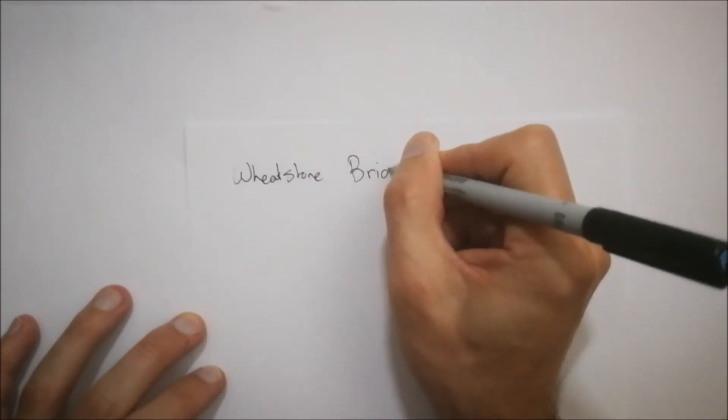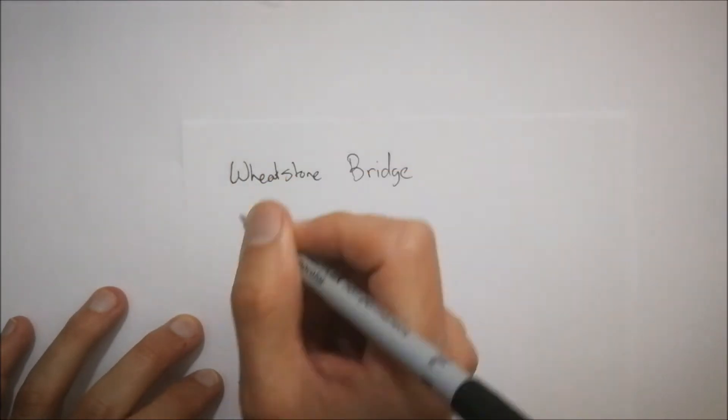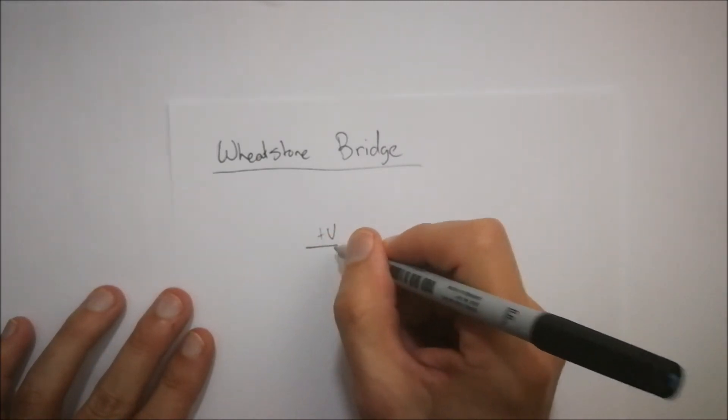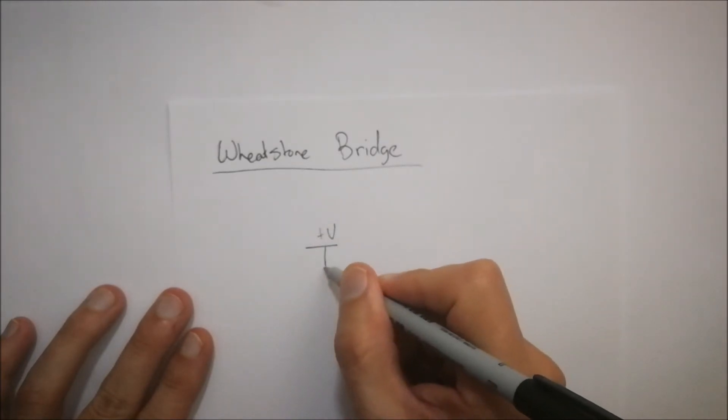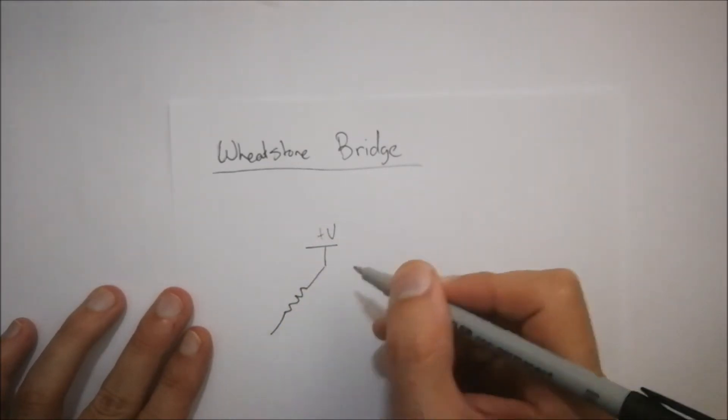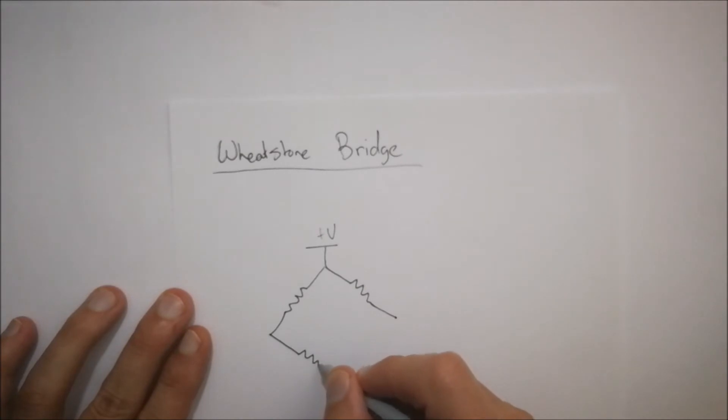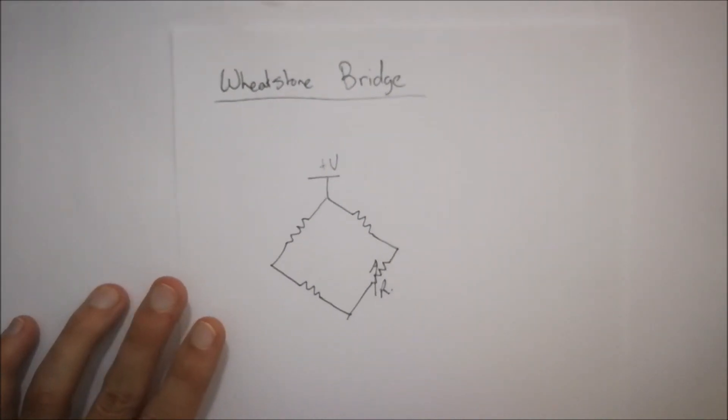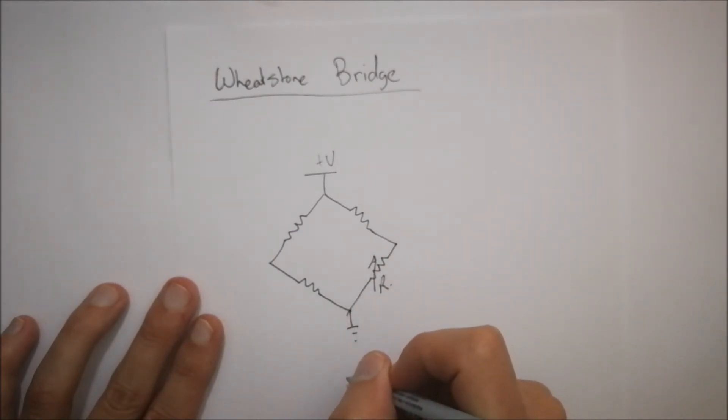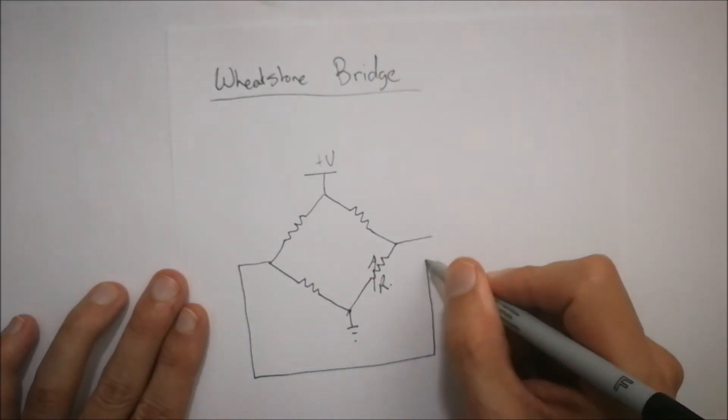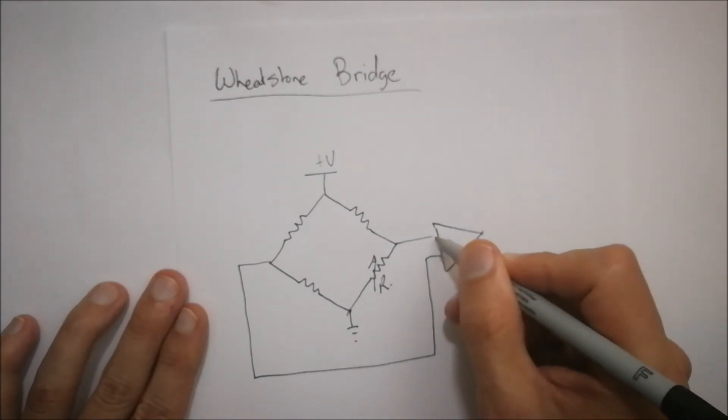A Wheatstone Bridge has got the following configuration. You're going to have some positive voltage that will come down. You've got essentially what looks like a bridge in terms of resistors that appear in this fashion. And then we've got our variable resistance over here, which is our sensor that we're essentially having. So this point over here will come down to ground.